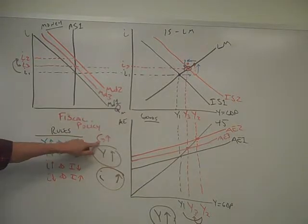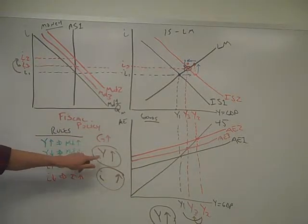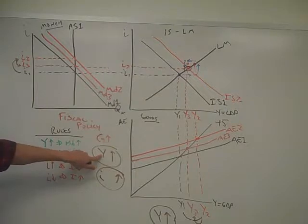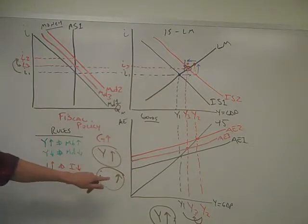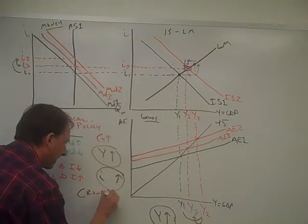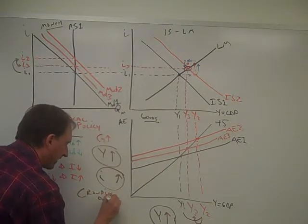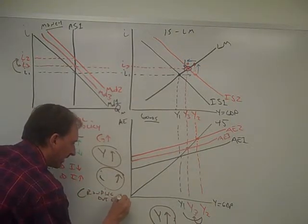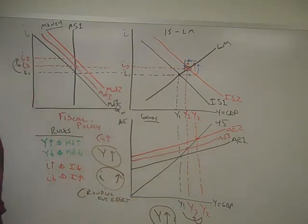When you increase government spending in the IS-LM model, you get what you want, which is increased GDP. You get economic growth, but you also get higher interest rates. And this is what they call the crowding out effect. Higher interest rates crowd out other investments. It's tough to compete with that if you have a small business. That's fiscal policy in the IS-LM model.